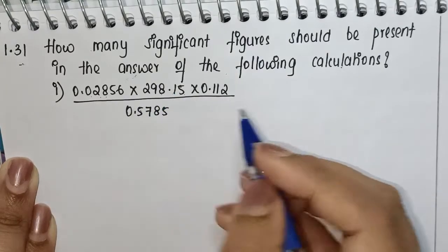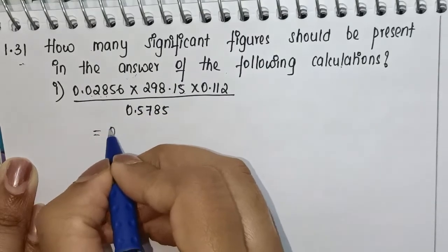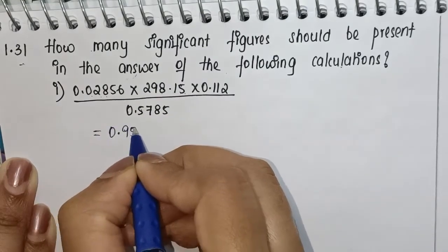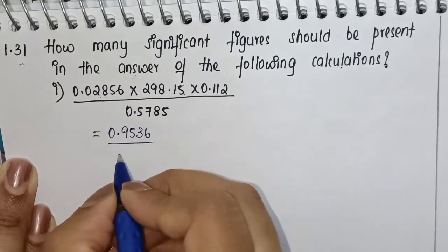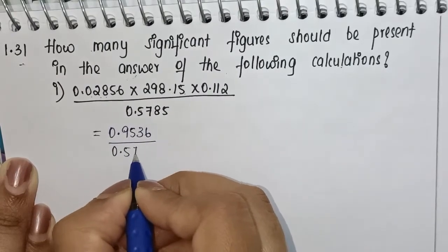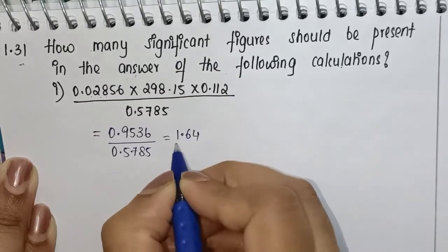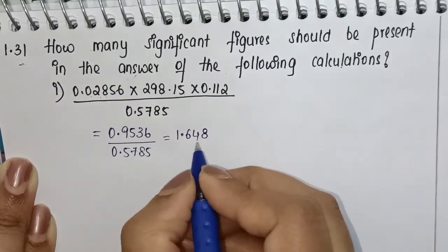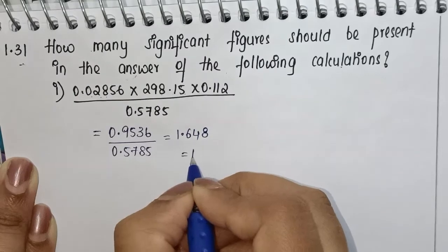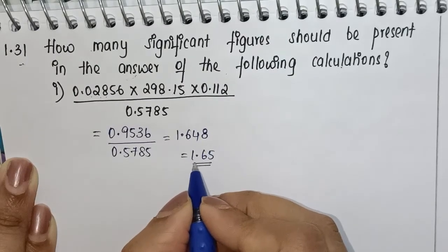When we calculate the numerator part, you will get 0.9536 divided by the denominator 0.5785. When we write this down, we will get our answer as 1.648, which we can round off and write as 1.645.